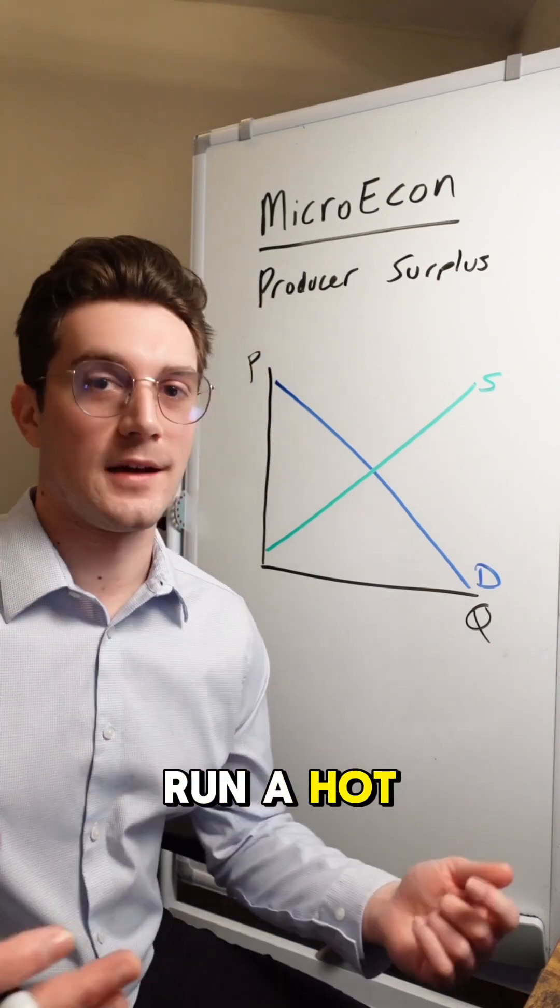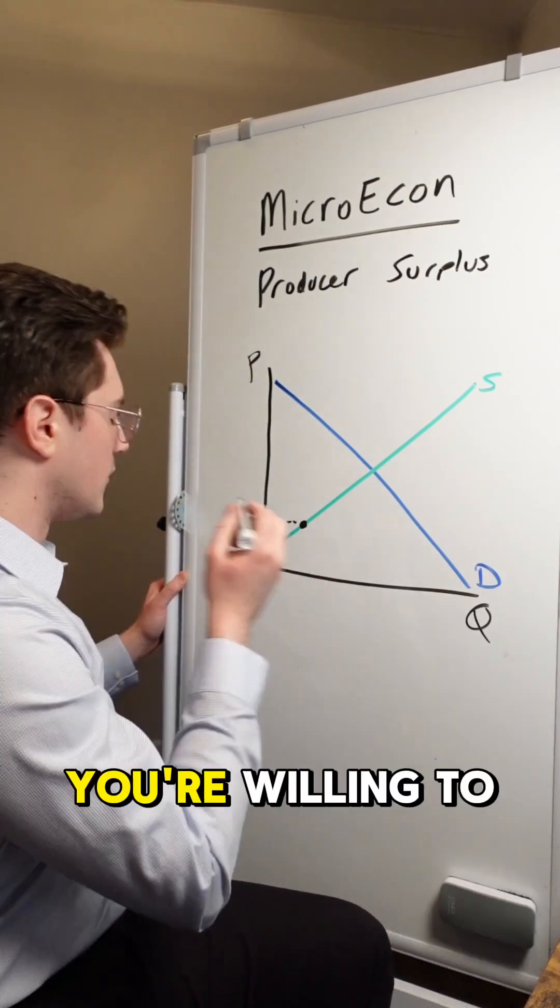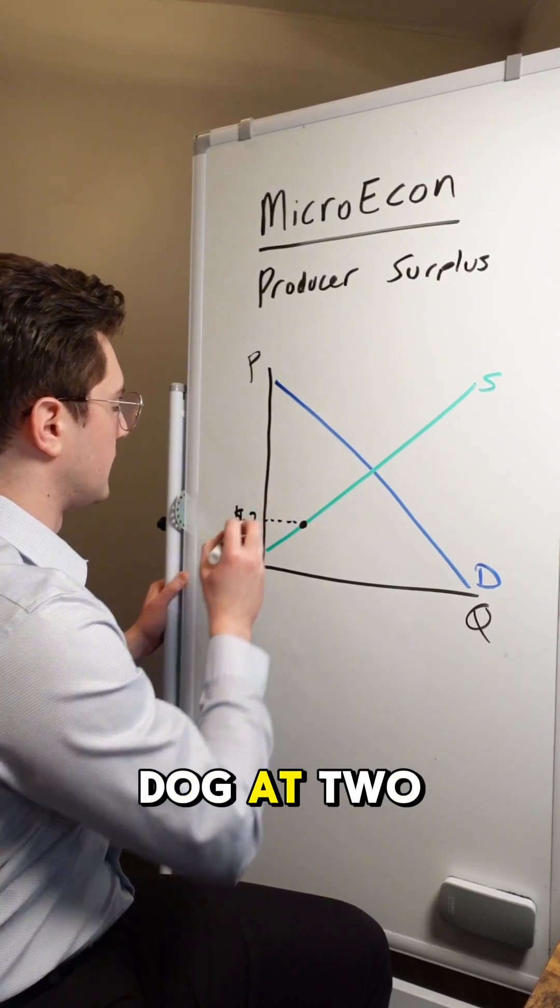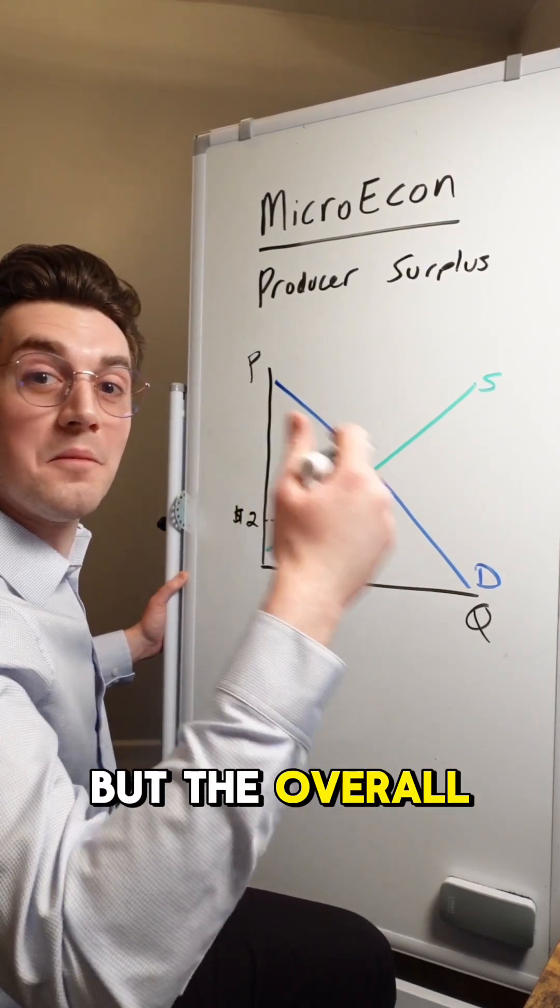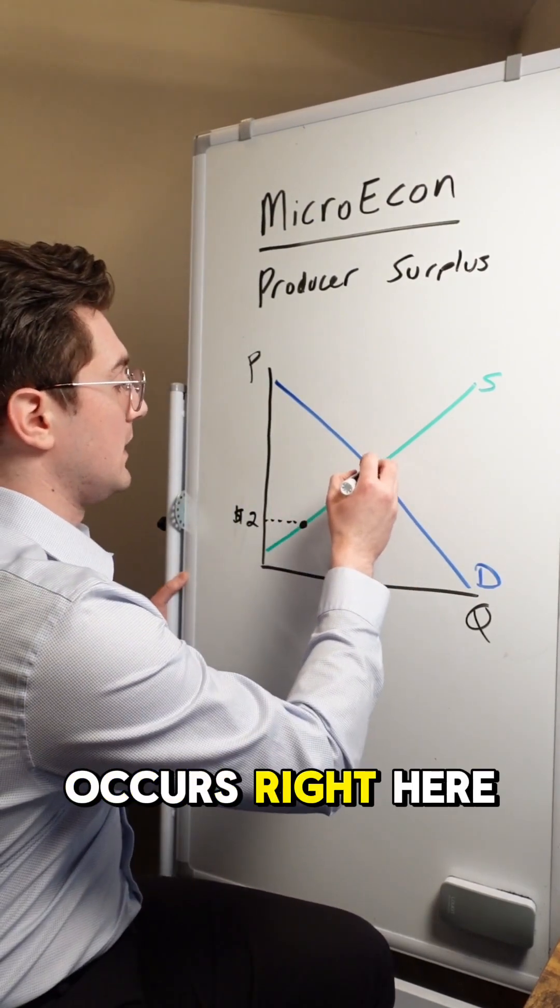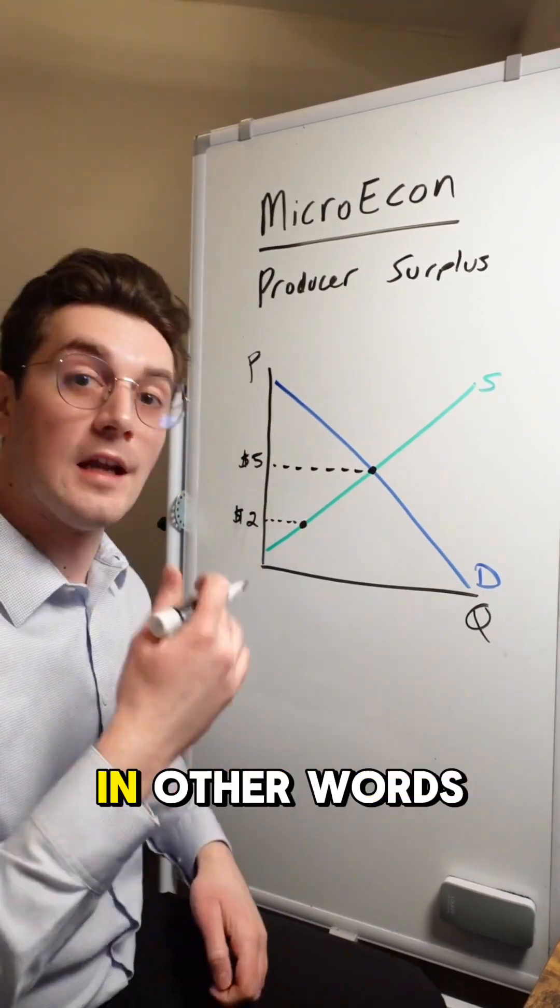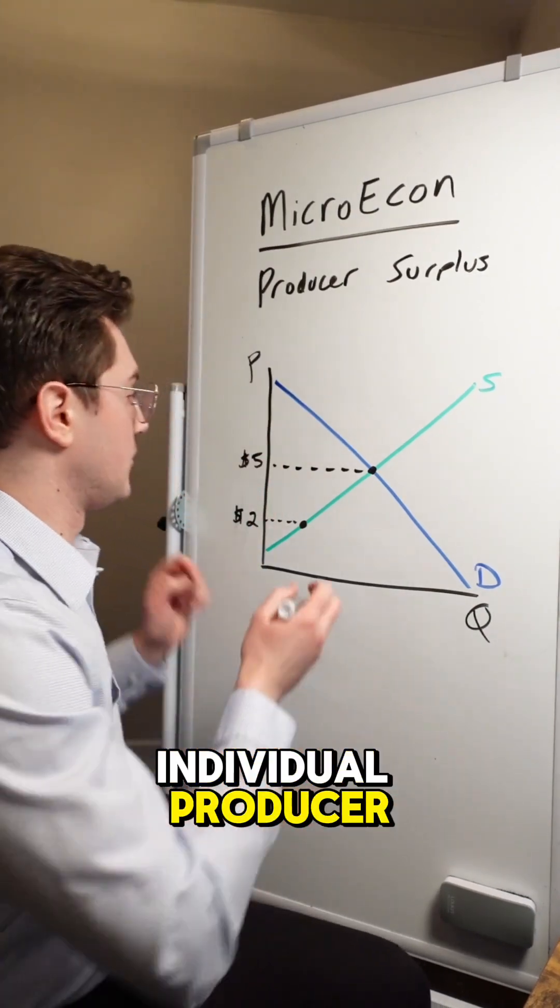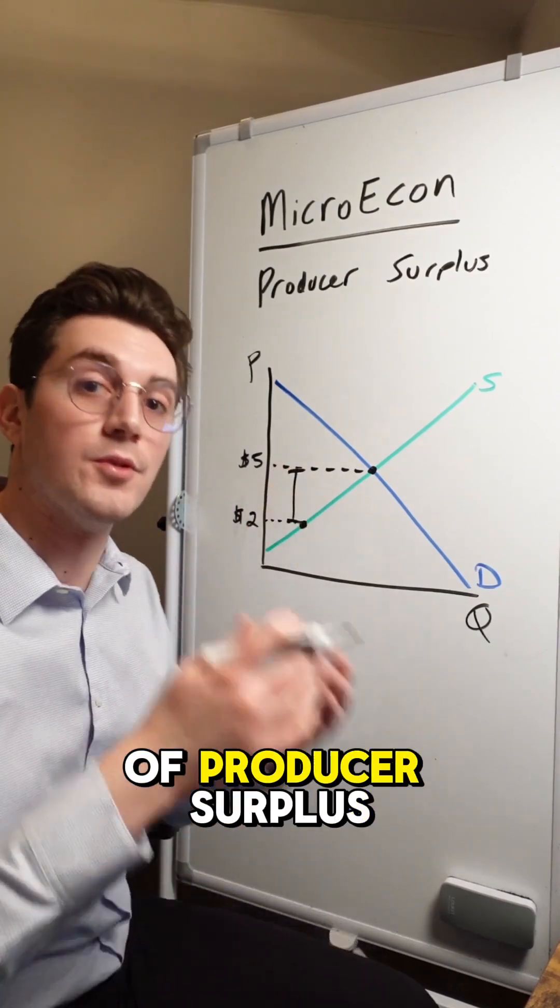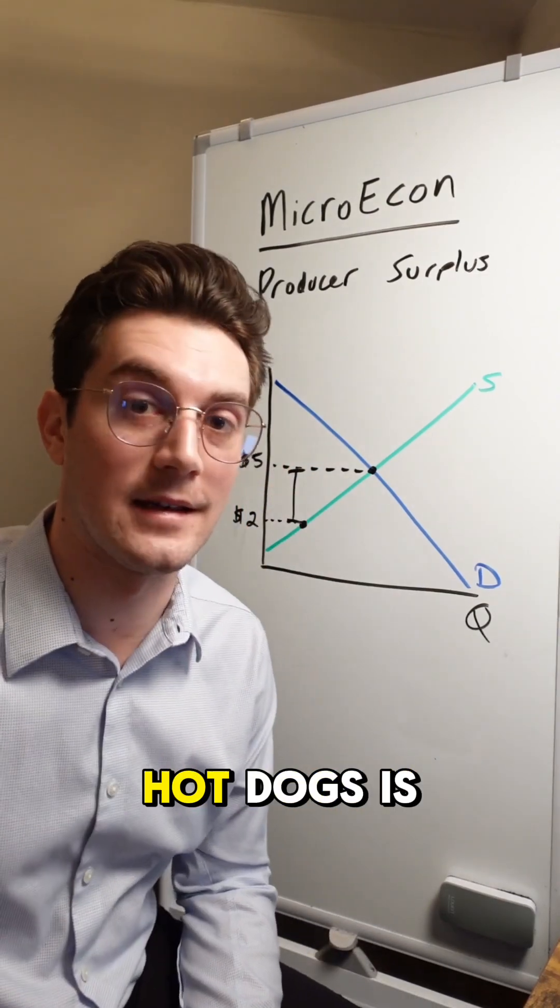Let's say you run a hot dog stand and your willingness to sell occurs right here. You're willing to sell one hot dog at two bucks, but the overall market equilibrium price occurs right here. The market is operating at a $5 equilibrium price. In other words, you as an individual producer are able to achieve $3 of producer surplus by selling your hot dogs.